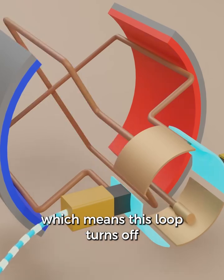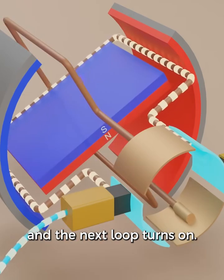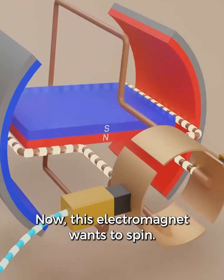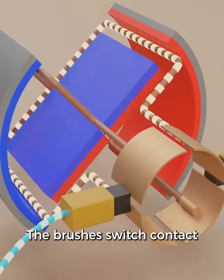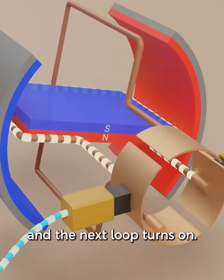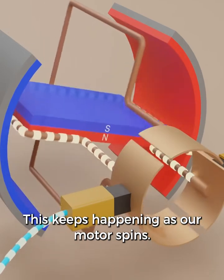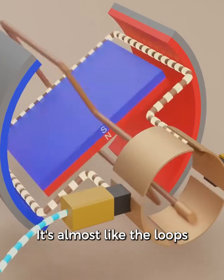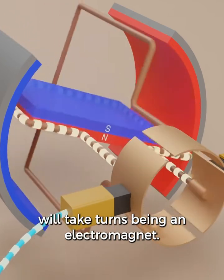which means this loop turns off and the next loop turns on. Now, this electromagnet wants to spin. The brushes switch contact and the next loop turns on. This keeps happening as our motor spins. It's almost like the loops will take turns being an electromagnet.